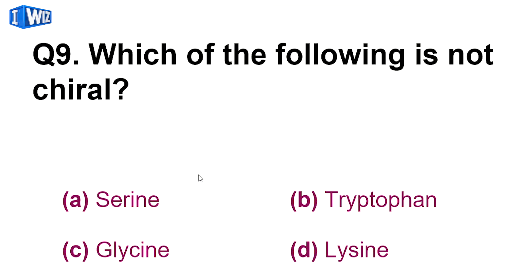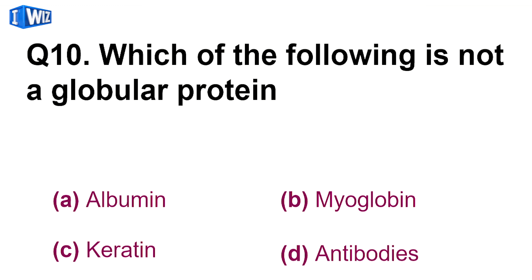Next is, which of the following is not chiral? Chiral wo hoota hai, jis carbon pe charo taraf different groups present hoon. In me se jo glycine hai, wo chiral compound nahi hai, kiunki uske dho taraf hydrogen present hai. Eek taraf acid group, aur eek taraf amine group. So dho same groups, eek same group dho taraf present hoonne ki wajah se, wo chiral nahi ho paata. So C is the correct answer.